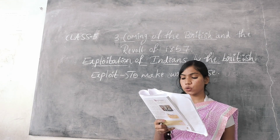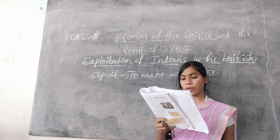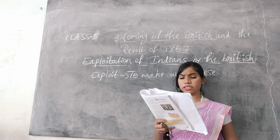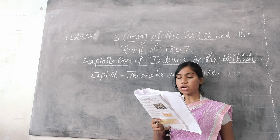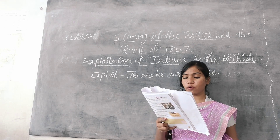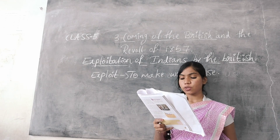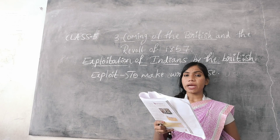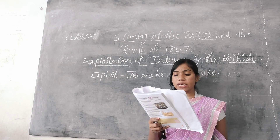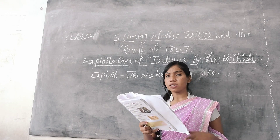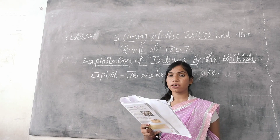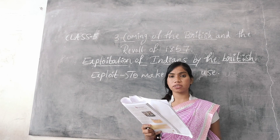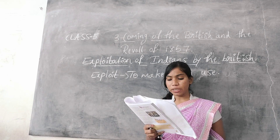This exploitation led to dissatisfaction among Indians and the feeling of wanting to take revenge. By seeing all this, Indians felt that they had to take revenge against the British.